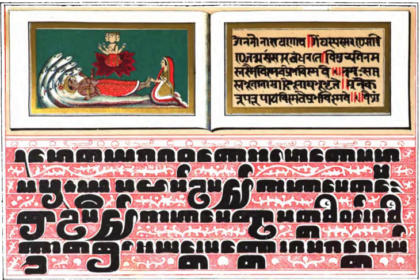The word Pali is used as a name for the language of the Theravada Canon. According to the Pali Text Society's Dictionary, the word seems to have its origins in commentarial traditions, wherein the Pali was distinguished from the commentary or vernacular translation that followed it in the manuscript. As such, the name of the language has caused some debate among scholars of all ages. The spelling of the name also varies.